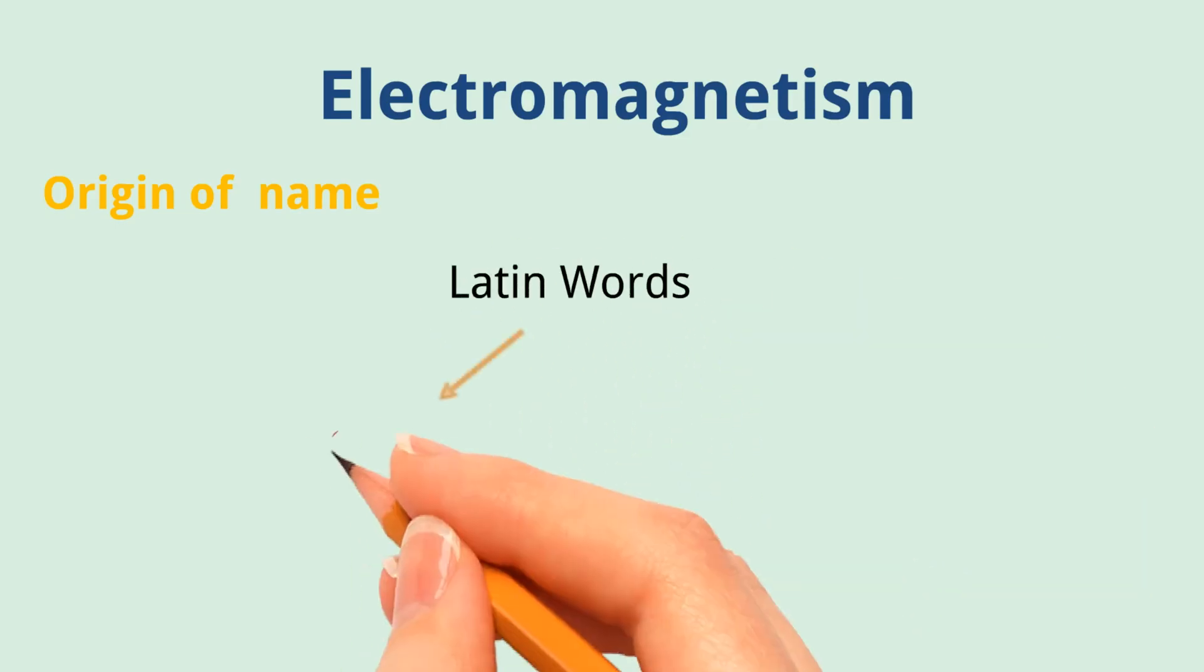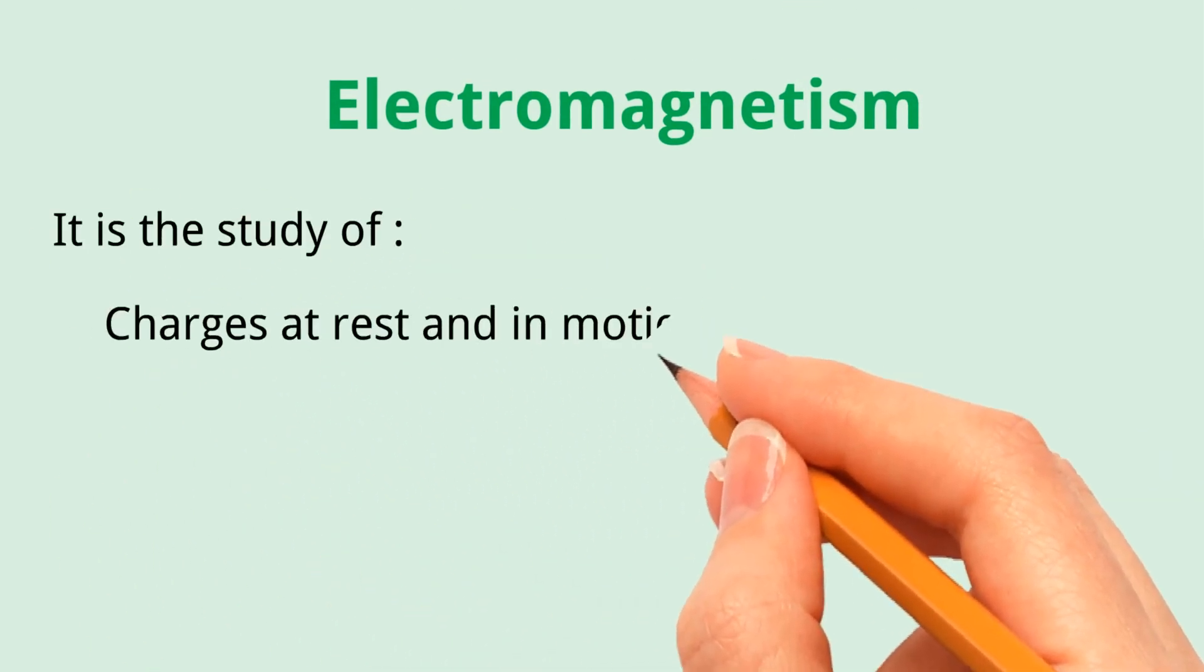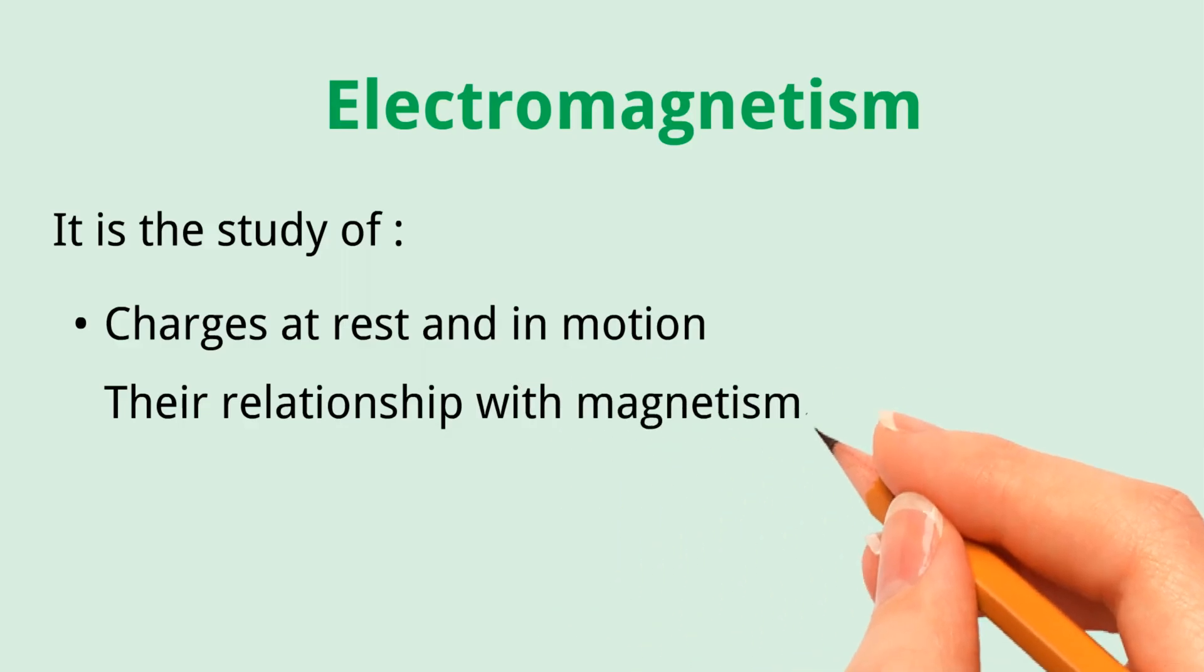Electromagnetism. Origin of name: The word electromagnetism is derived from two Latin words, 'electricus', meaning amber, and 'magnetismus', meaning attractive power. It is the study of charges at rest and in motion, their relationship with magnetism, and their effects.